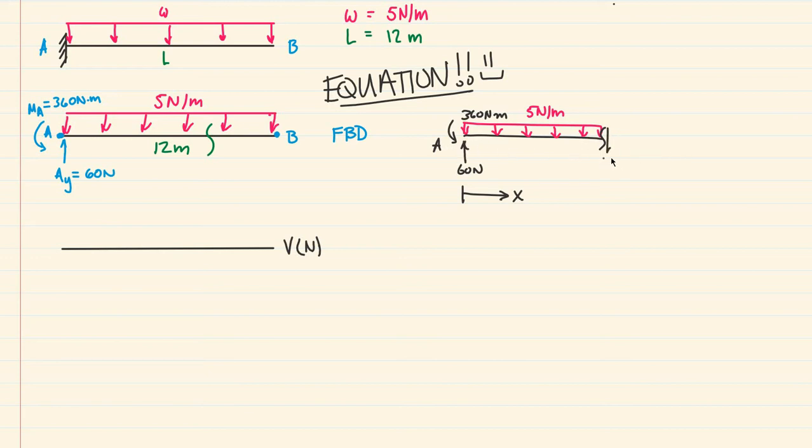we have our internal shear going down, which is V(x). Our positive sign convention for the right side of a cut is shear going down, and the moment would be going counterclockwise, which is M(x). This distance right here is just some distance x.